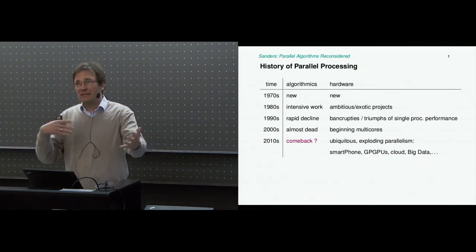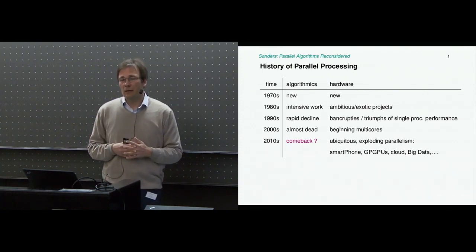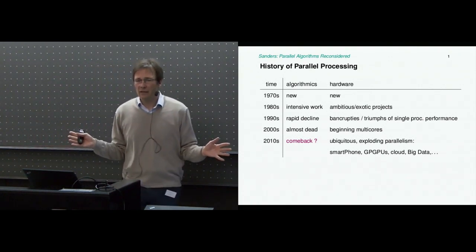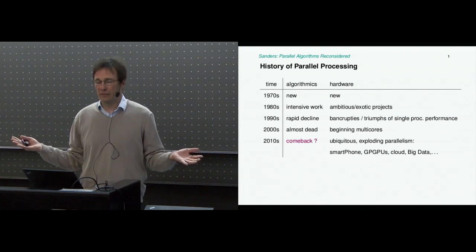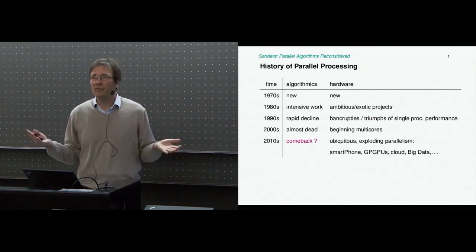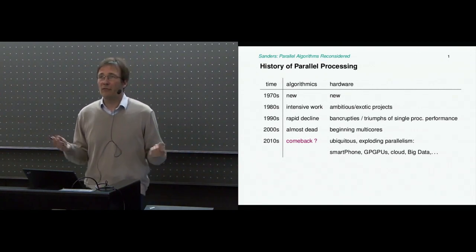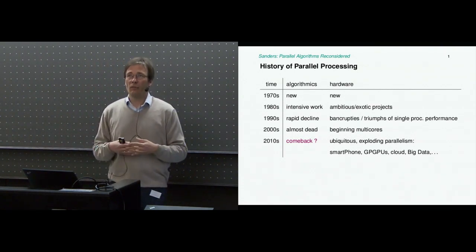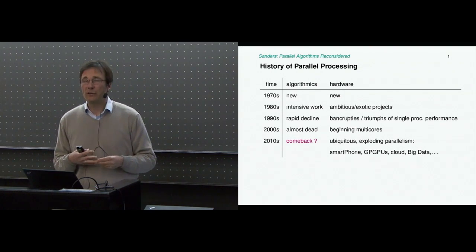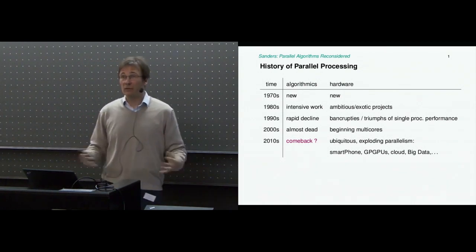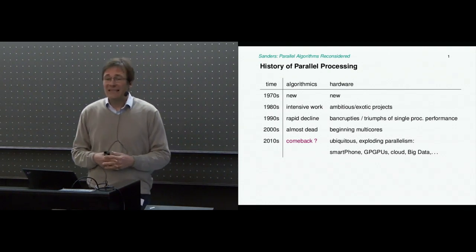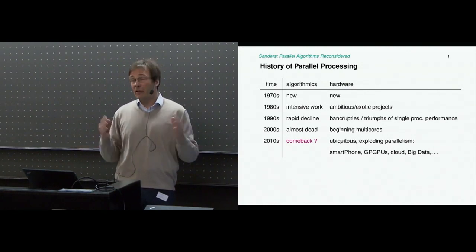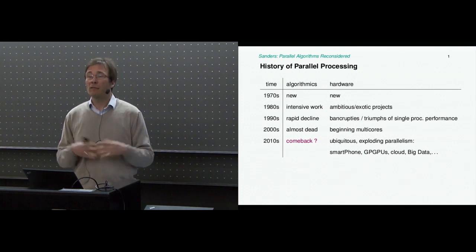But towards 2007 or so, the hardware stuff began to change. Multicores were slowly showing up. And what we have now in the 2010s is that parallel processing is suddenly ubiquitous—there's exploding parallelism. Even a smartphone has eight-core processors right now. Graphics processing units need tens of thousands of threads to work efficiently. You have cloud computing and big data applications that require massively parallel computing. There are first traces that the algorithms community is noticing—there's a slow comeback, but I think it's much too slow.